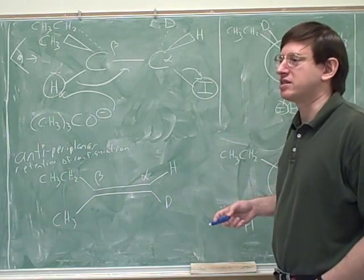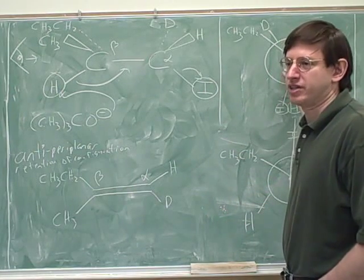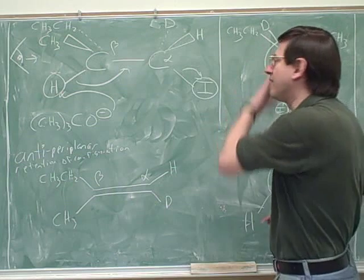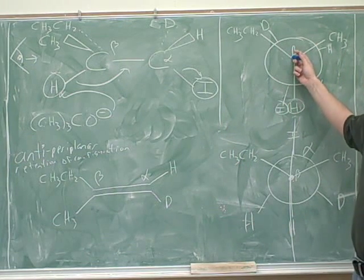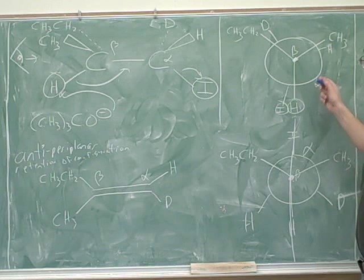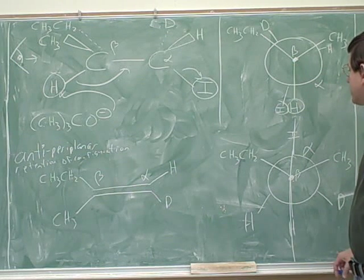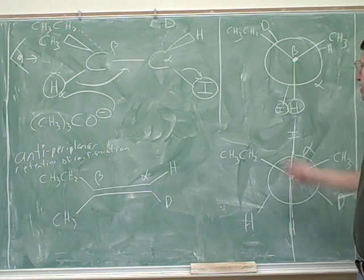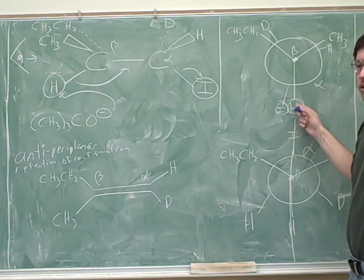Because different people can put the eye in different places. Different people can end up with different Newman projections and still be correct. And then carefully draw the Newman projection. Label the alpha and the beta carbons in the Newman projection as well. So that would take some practice. And again, I think it's good to actually circle the leaving group and the beta hydrogen so we don't lose track of them.